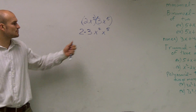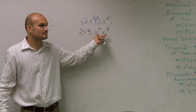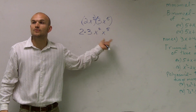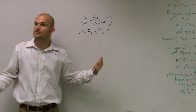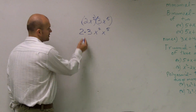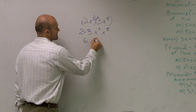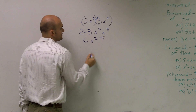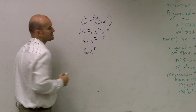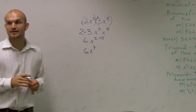So what happens when we have two terms with the same bases? What do we do with their exponents? Well, when they have the same bases, we add the exponents — and that was our rule of exponents that we learned. So two times three is six. X squared times x to the fifth: two plus five gives us six x to the seventh power. And that's all you guys had to do for that.